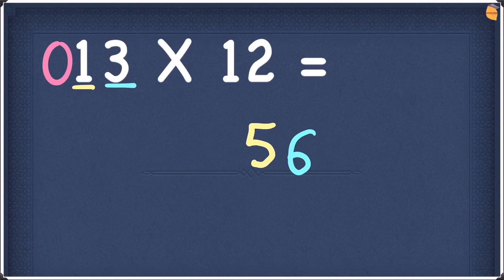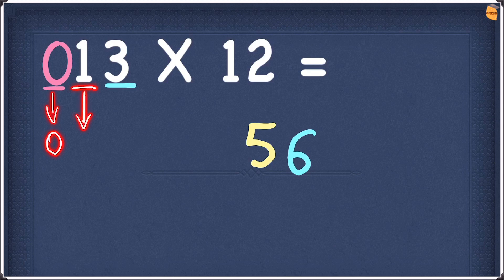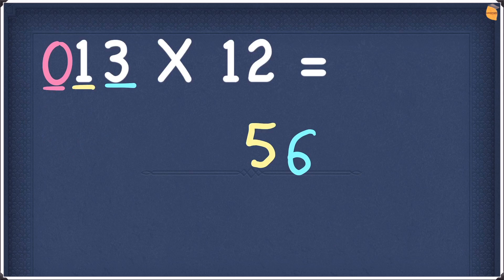Now this is where the 0 comes in handy. 0 doubled is 0. Add this to the number on the right hand side, which is 1. 0 plus 1 is 1. We can write this 1 next to the 5 and the 6 to give you an answer of 156.